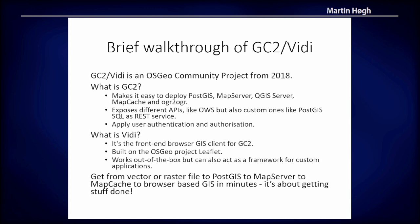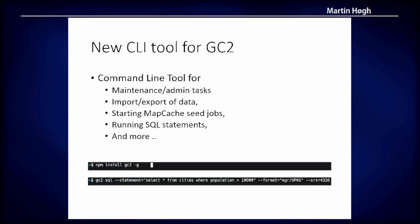There's been a lot of development recently. I'll mention a new CLI tool — CLI stands for Command Line Tool — and some things are actually easier to do on the command line than in a graphical user interface. This tool can run maintenance tasks like rewriting map files, flushing caches, running database migrations, and more. You can start, inspect, and stop map cache seed jobs, which can run for a long time — days maybe — when you're pre-creating map tiles instead of on the fly. Coming soon, you'll be able to run SQL statements and get the result as GeoJSON or as a file in an OGR-supported format.